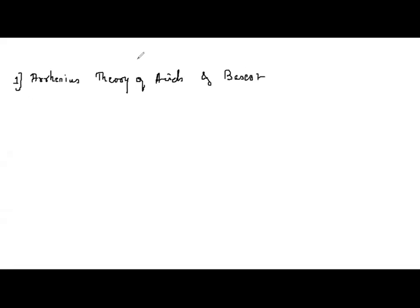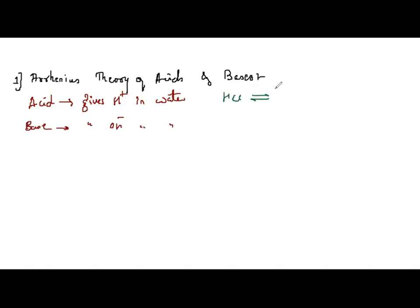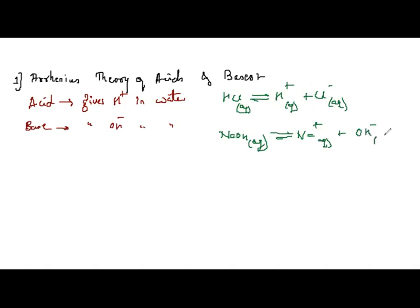According to Arrhenius theory, an acid is a substance which gives H⁺ ions in water, and a base is a substance which gives OH⁻ ions in water. Examples of strong acids: HCl, HNO₃, H₂SO₄, HClO₄. Examples of strong bases: NaOH, KOH. Even hydrogen compounds cannot be regarded as an acid if they do not dissociate in water to give H⁺.